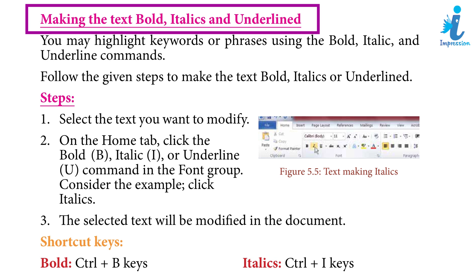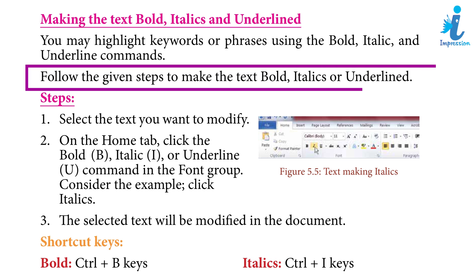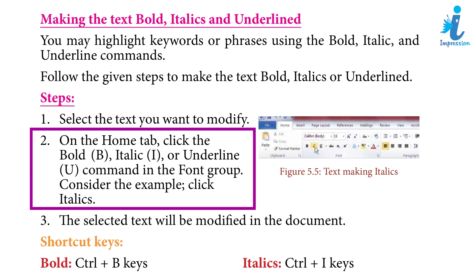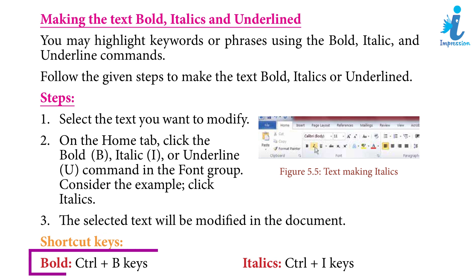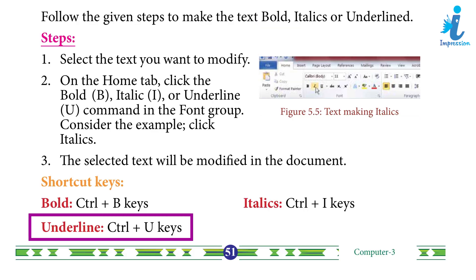Making the text Bold, Italics and Underlined: You may highlight keywords and phrases using the bold, italics and underline commands. Steps: 1. Select the text you want to modify. 2. On the Home tab, click B for Bold, I for Italic, or U for Underline in the Font group. 3. The selected text will be modified in the document. Shortcut keys: Bold — Ctrl+B; Italics — Ctrl+I; Underline — Ctrl+U.